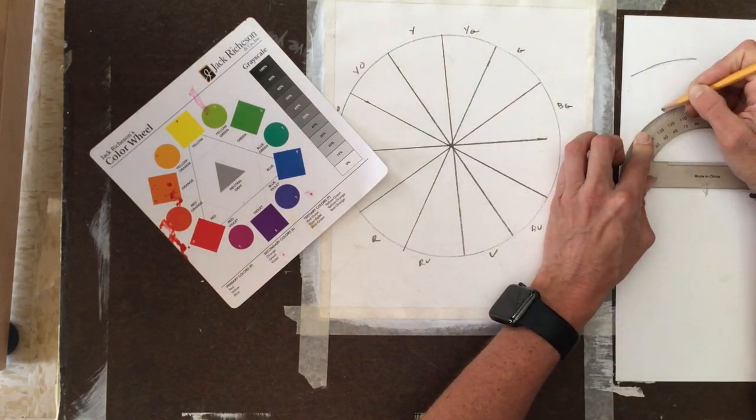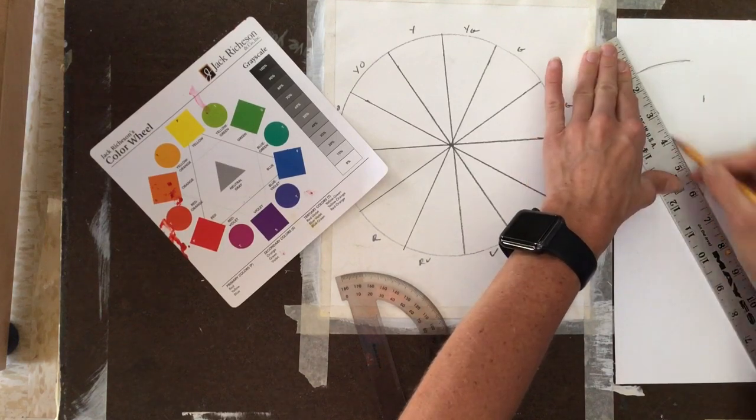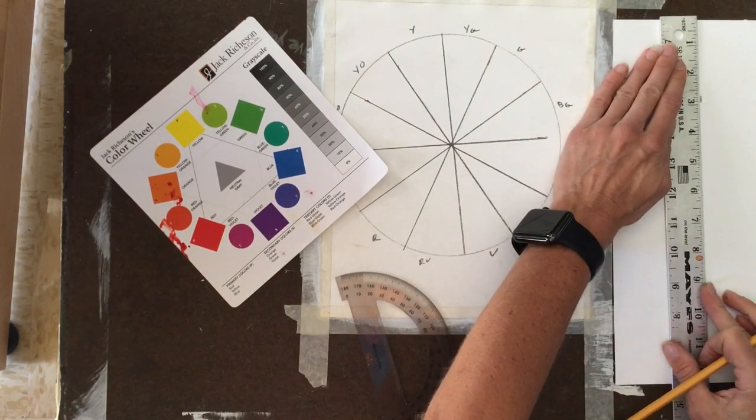In each section, you're going to be creating a design or pattern for your color wheel. Here I am creating a practice section.